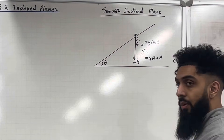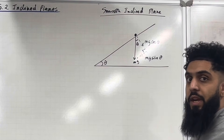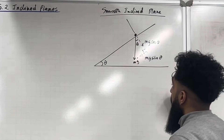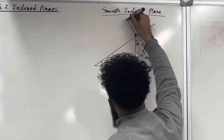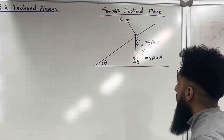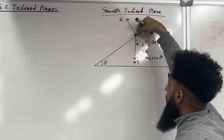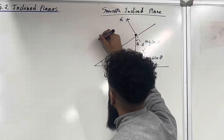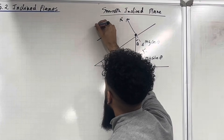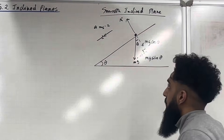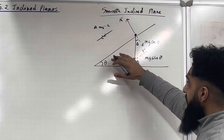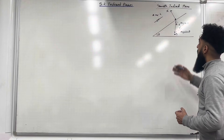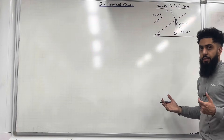Now the other force acting on this particle is the normal reaction. The normal reaction is perpendicular to the contact surface. We can call that normal reaction R. This particle is held at rest; if I let go, it will accelerate down the plane. We can call that acceleration A metres per second per second. Because the inclined plane is smooth, there is no friction present, so we won't be labelling friction.